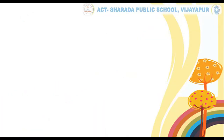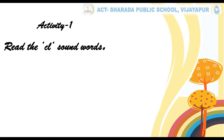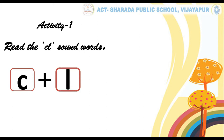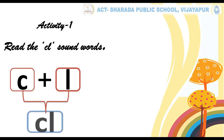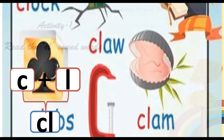So kids, let us do our first activity — read the CL sound words. Kids, what is the sound of the letter C? Very good, it's K. Now tell me, what is the sound of the letter L? Very good, it is L. Children, when we add C and L together, it becomes the CL blend sound. So kids, we have to read and practice CL sound words. Now let us read a few words.